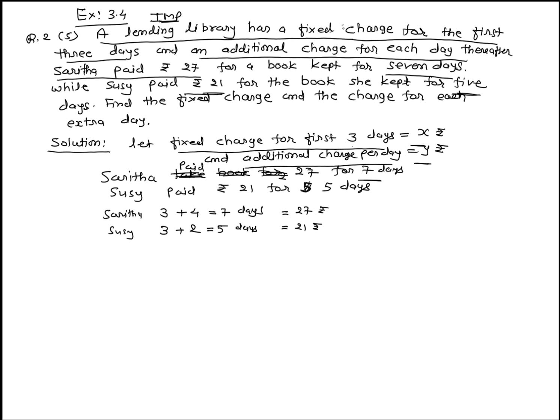Fixed charge for 3 days is X, plus remaining 4 extra days at Y per day is 4Y, equal to 27. This is equation number 1.